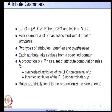To do a recap: attribute grammars are extended context-free grammars. Every symbol of the set N union T has associated with it a few attributes. There are two types of attributes: inherited and synthesized. The same attribute cannot be both inherited and synthesized, but there could be several inherited and several synthesized attributes associated with each symbol. Each attribute takes a value from a specified domain such as integer, real, or cross product of these.